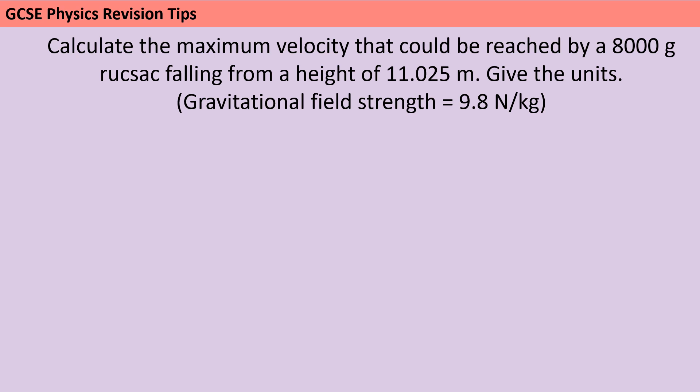The key to solving this question is the idea of the conservation of energy. So energy cannot be created, it cannot be destroyed, it can only be transferred between different stores. And here I have a potential energy store and a kinetic energy store. So in other words, the maximum amount of kinetic energy that that rock sack can have while it's falling is the same as the amount of potential energy that it had due to being lifted in a gravitational field. Now we know that there isn't going to be 100% efficient transfer. Some of that energy is going to be dissipated into the surroundings. But we're asking this question about the maximum velocity. So therefore we're going to think about the maximum amount of kinetic energy that could be and that will be the same.